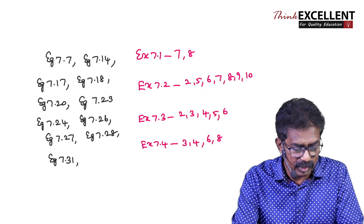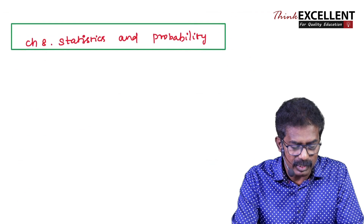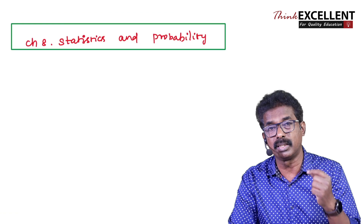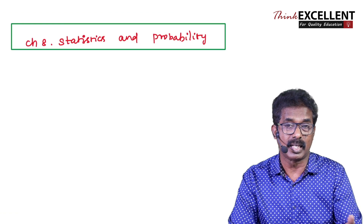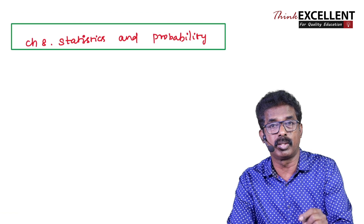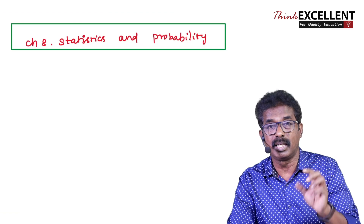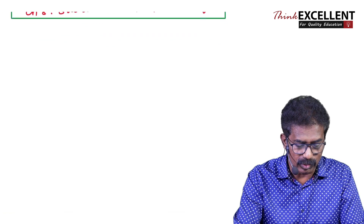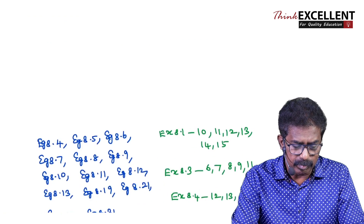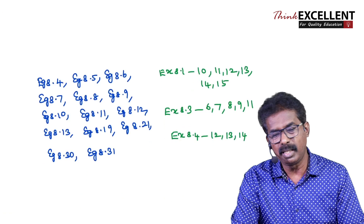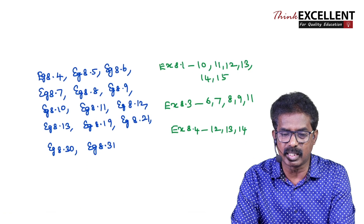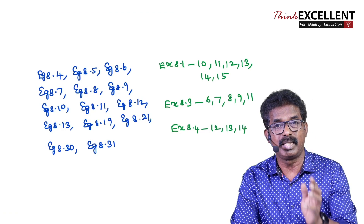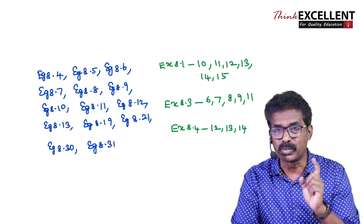The last chapter — Statistics and Probability. Standard deviation has a little complexity — if you have a choice question, you can leave it. For Probability, go through questions involving coins, sums, dice, and cards. A collection of five-mark questions is given here. In the five-mark questions, do all example sums. I am sure you can score fifty out of fifty on the five-mark section — you can score full marks.